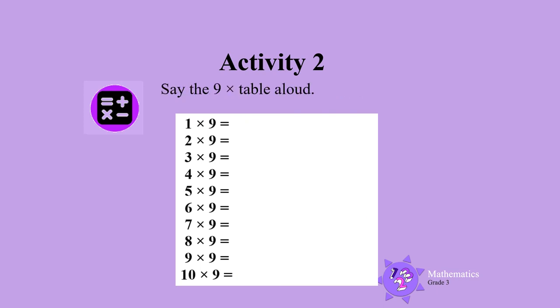Let's say the 9 times table aloud. Are you ready? 1 times 9 is 9. 2 times 9 is 18. 3 times 9 is 27. 4 times 9 is 36. 5 times 9 is 45.